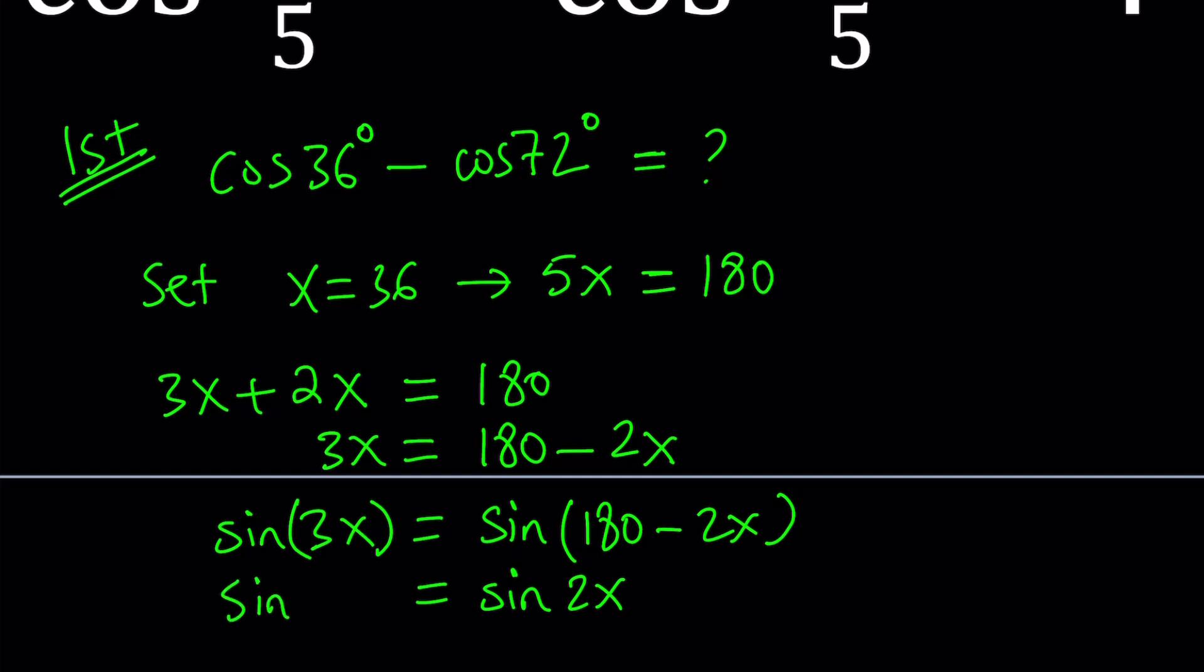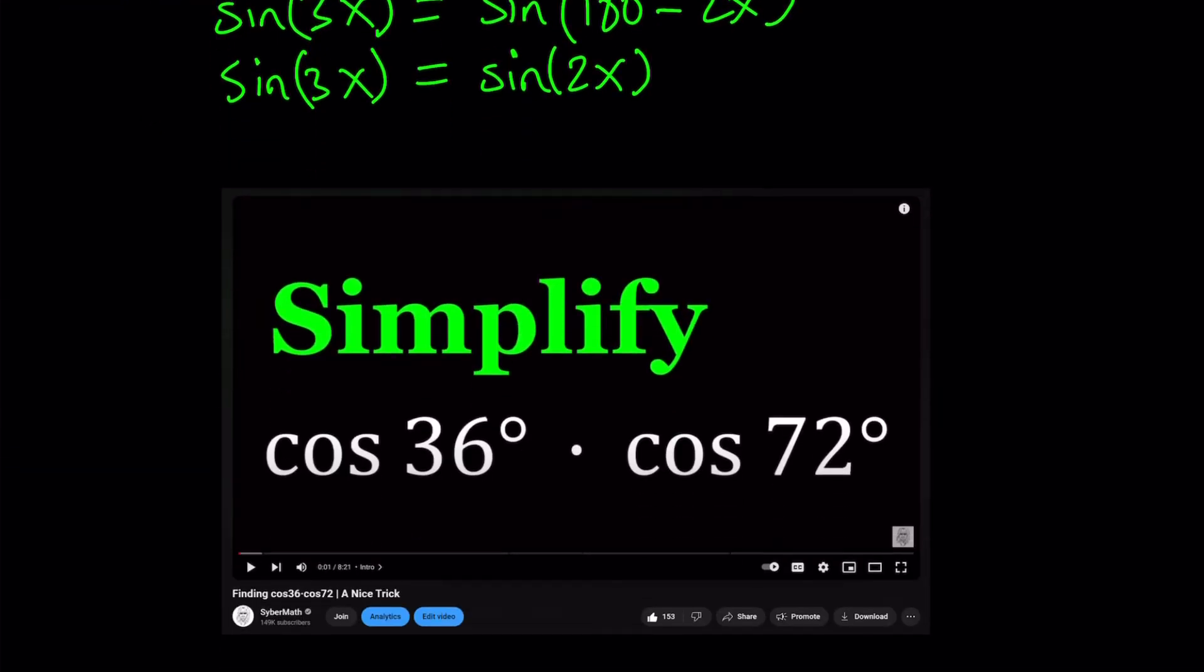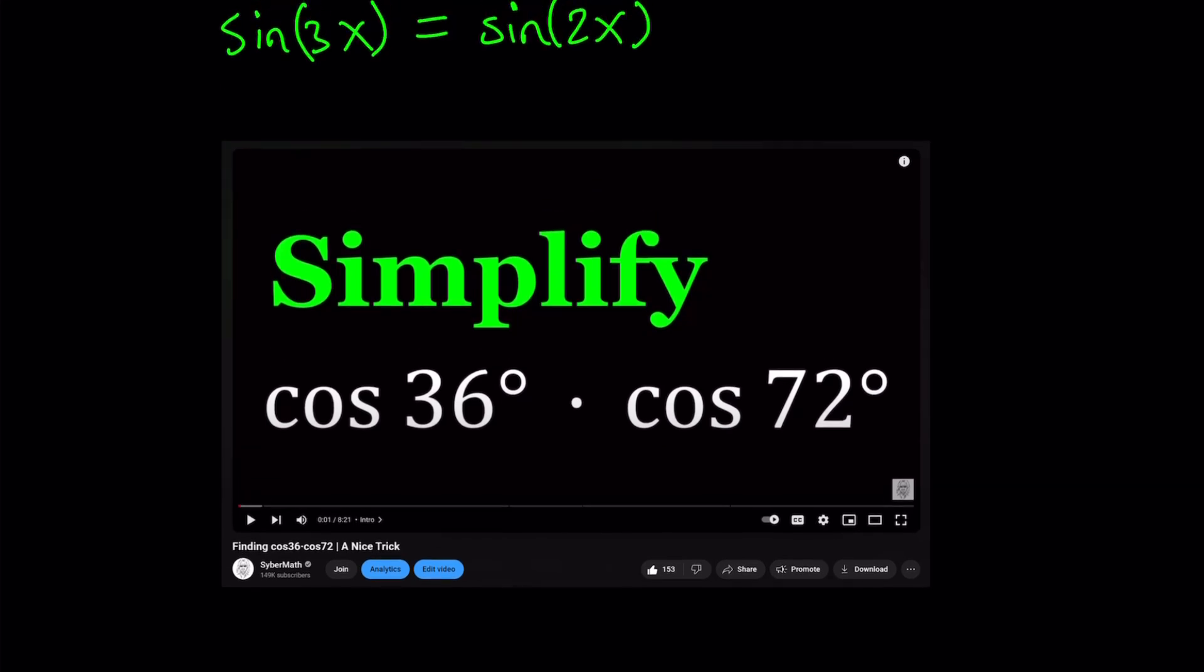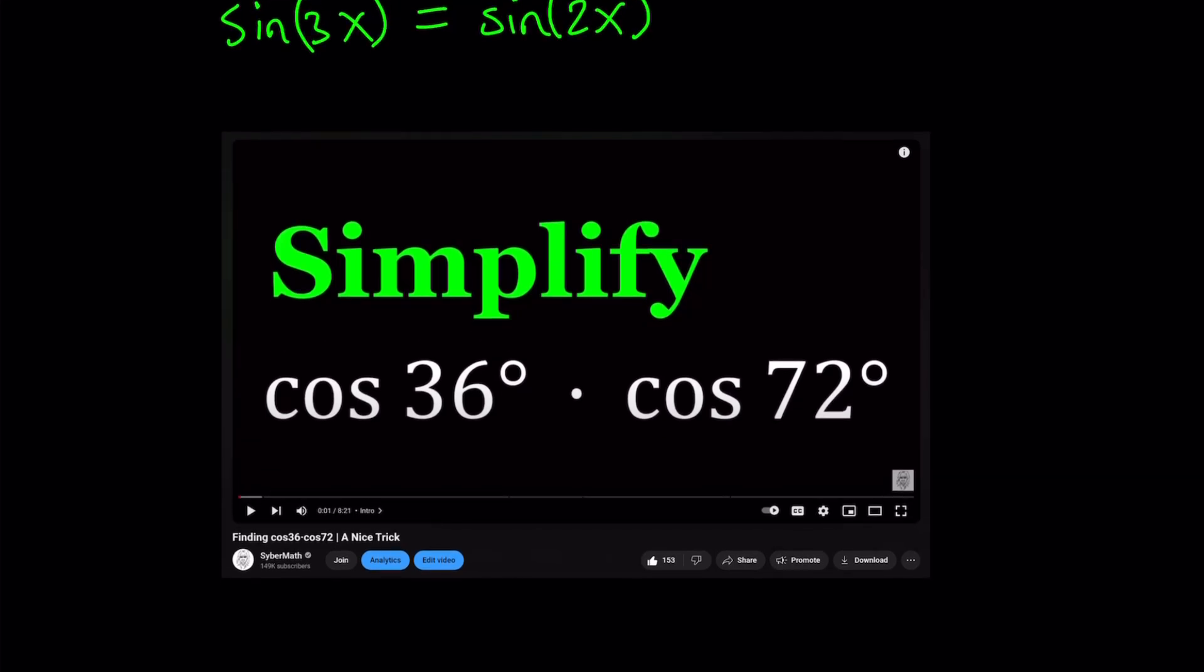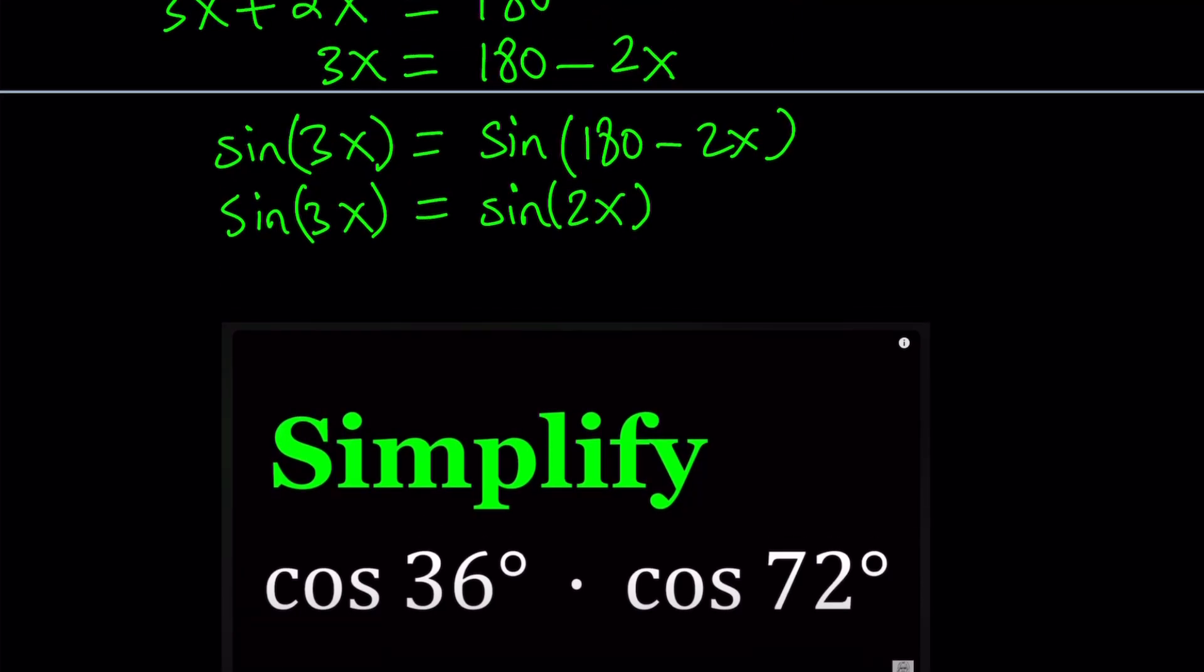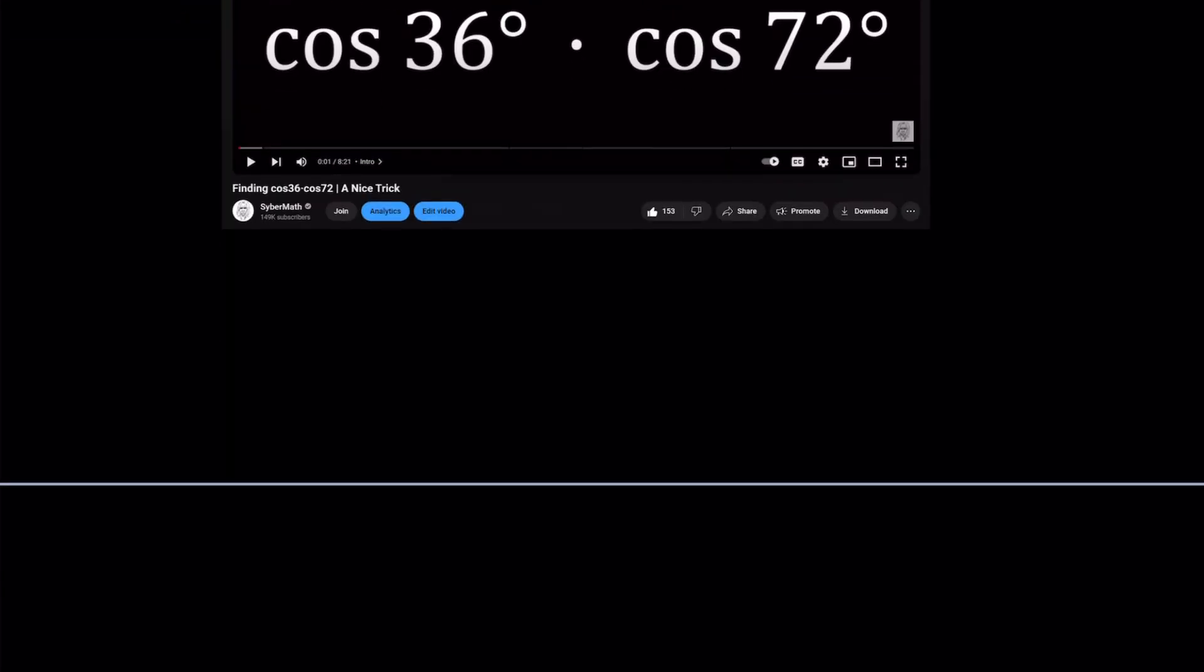Sine of 180 minus 2x is the same as sine of 2x. This gives us sine of 3x equals sine of 2x. I made a video about this a while ago, maybe months ago, where I covered the product of these two numbers. So we now have sine 3x equals sine 2x. There's a formula for sine of 3x: it is 3 sin x minus 4 sin cubed x. For sine of 2x, I can write 2 sin x cosine x, which is something that I memorized.